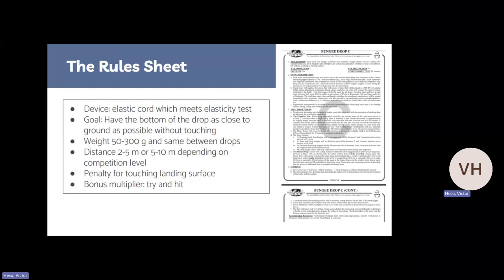Starting off with the rule sheet. The main thing here with this build event is that the device is an elastic cord, which you are providing. This has to meet a certain elasticity test stated within the rules. Basically, the bottom one meter section of your device must be able to stretch to 1.25 meters when a 500 gram weight is attached.